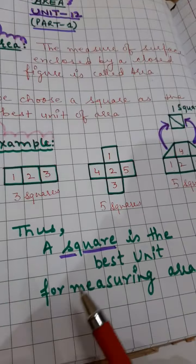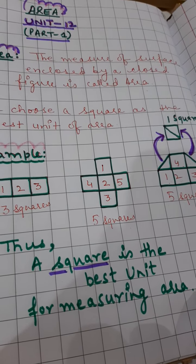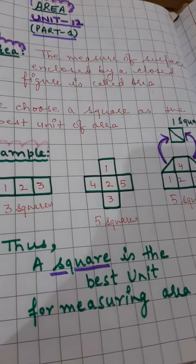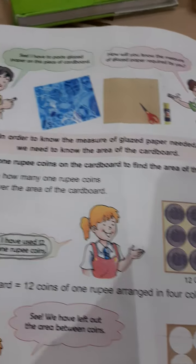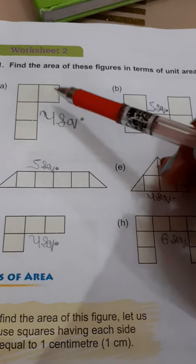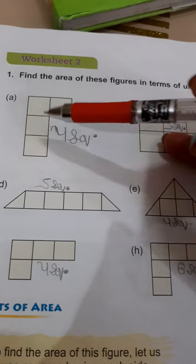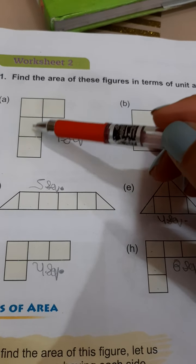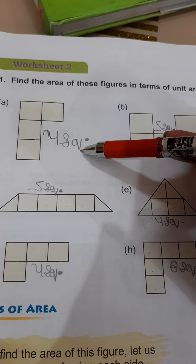Thus a square is the best unit for measuring area. Let us do the questions of worksheet 2. Find the area of these figures in terms of unit area or squares. Here students, you can count: 1, 2, 3, and 4 — there are 4 squares. So its area is 4 squares.